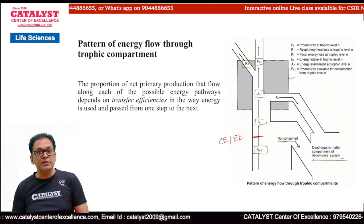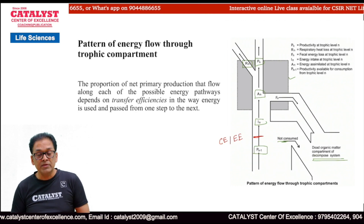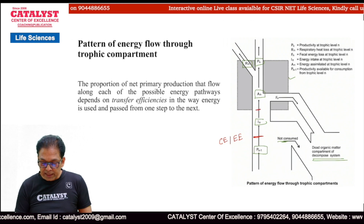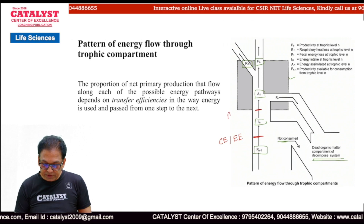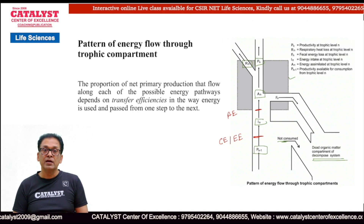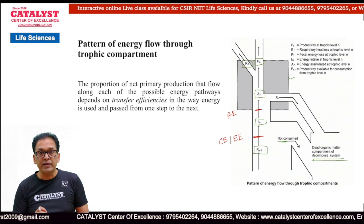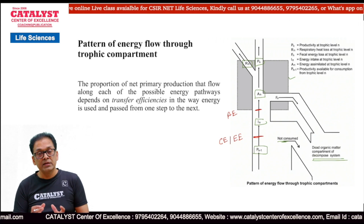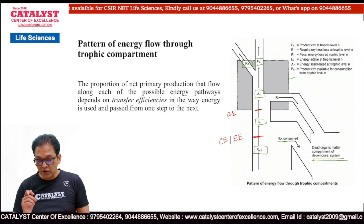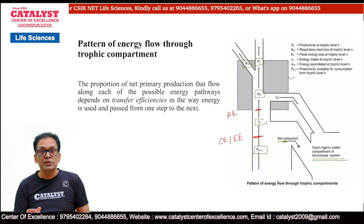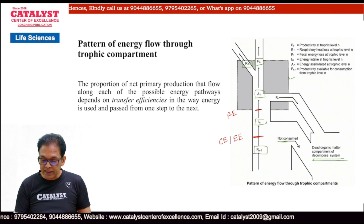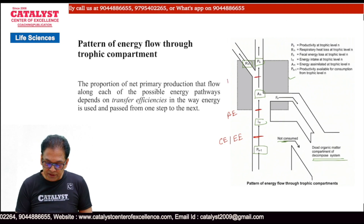Then, what part of the ingested material will become AN — this is what we call assimilation efficiency. And whatever has been assimilated, what portion of it will become PN — since a little bit is lost as RN, not all of AN becomes PN. So what proportion of AN becomes PN is what we call production efficiency.